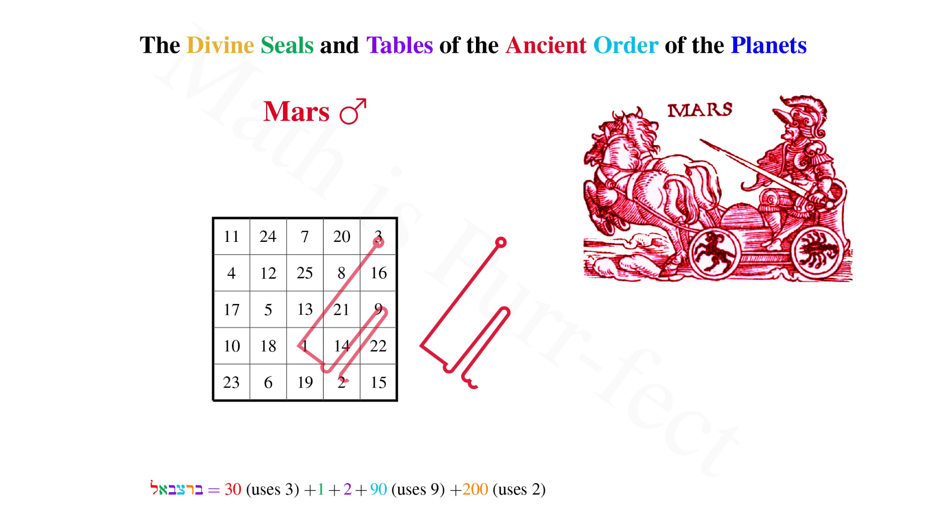And last but not least, the initial Bet, with a value of 2, gives us a sum of 325, the very number associated with Mars.